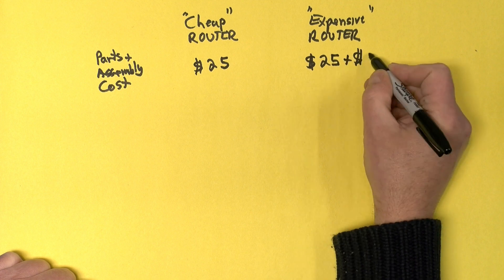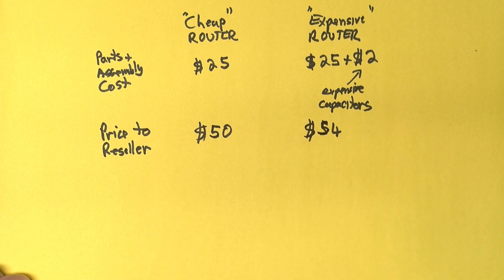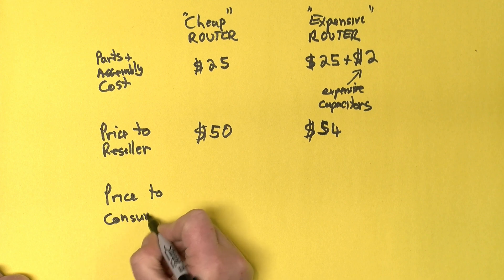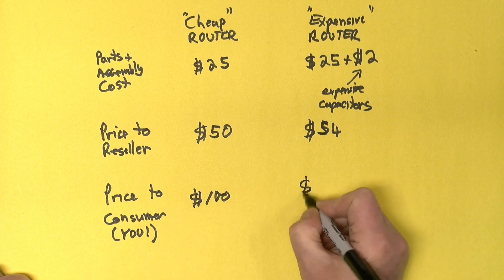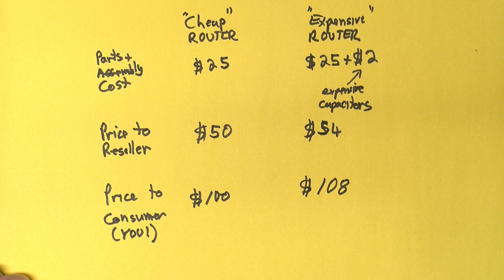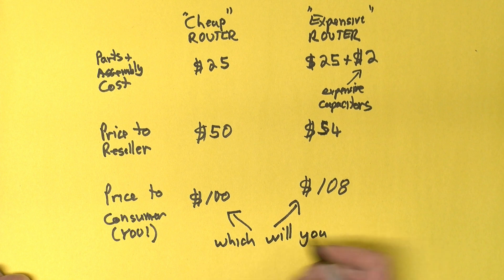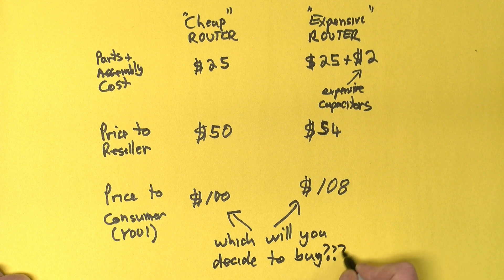So, how significant is that two bucks? Well, the manufacturer has to make some money, and what they'll typically do is mark things up. So, they'll mark the two bucks up to four bucks, and then the reseller also has to make some money, so they'll double it as well. So, what that means is with our way better capacitors, the hundred dollar router now costs eight bucks more and costs a hundred and eight dollars. And that might not seem like very much, and certainly if I saw a router with a mean time between failure that was way longer, I'd easily pay eight bucks more, but they generally don't even give that, because nobody would know to look at that. And, for that matter, most people would just look and say, hey, the hundred one is probably just as good as the hundred and eight dollar one. I'll save eight bucks.